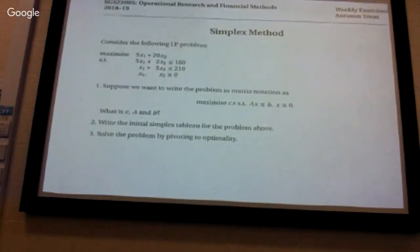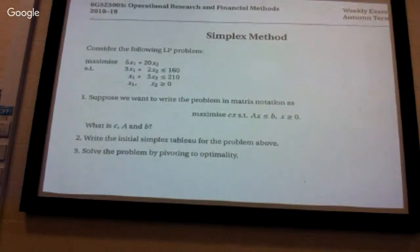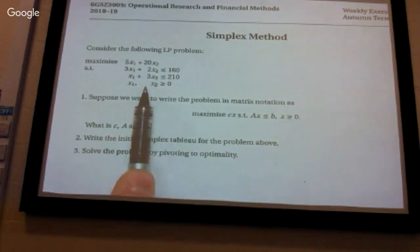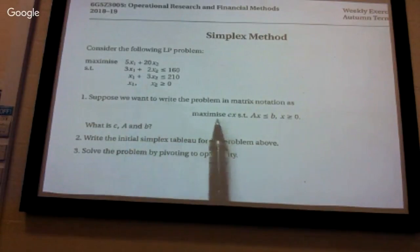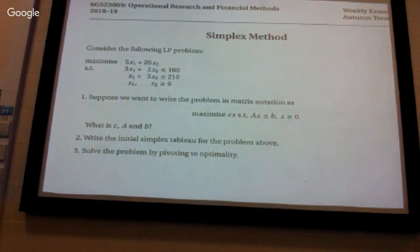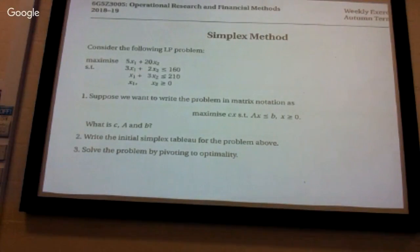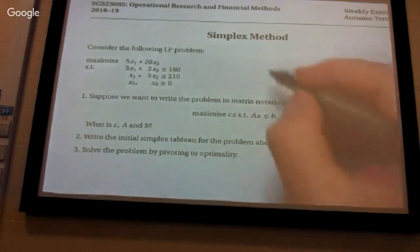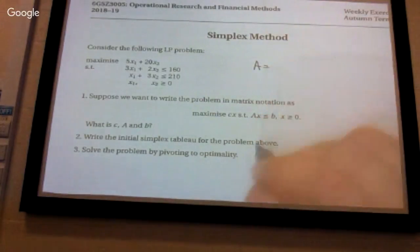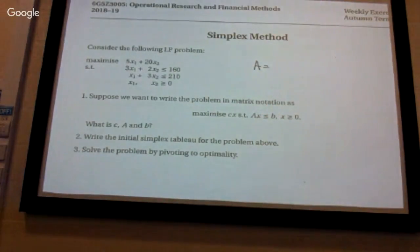Well, that's exactly what we were doing here. So in this case, if I want to write this problem in this way, what's going to be — what is a, c, and b variables? Okay, a is a matrix, so what does it look like? Yeah — 3, 2, 1, 3.